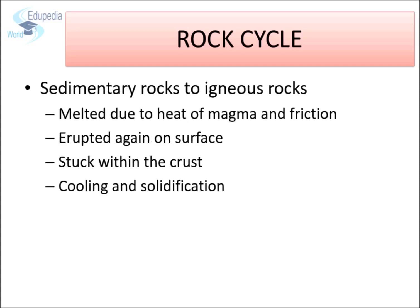Sedimentary rocks can again convert into igneous rocks. Sedimentary rocks can melt due to the heat of magma or friction generated by plate movement. Some of this molten rock might erupt again on the surface, while the remaining may stay within the crust or get mixed into the mantle. In any case, as this molten rock cools and solidifies, it forms new igneous rocks. That's how sedimentary rocks convert back to igneous rocks.